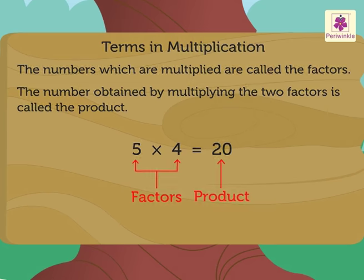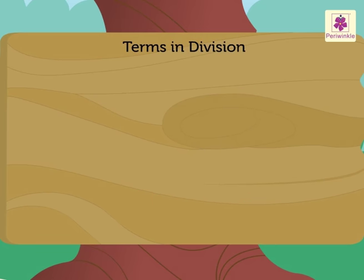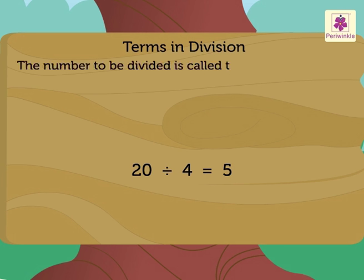Now, look at the division example. 20 divided by 4 is equal to 5. Here, the number to be divided is called the dividend. Here, number 20 is the dividend.